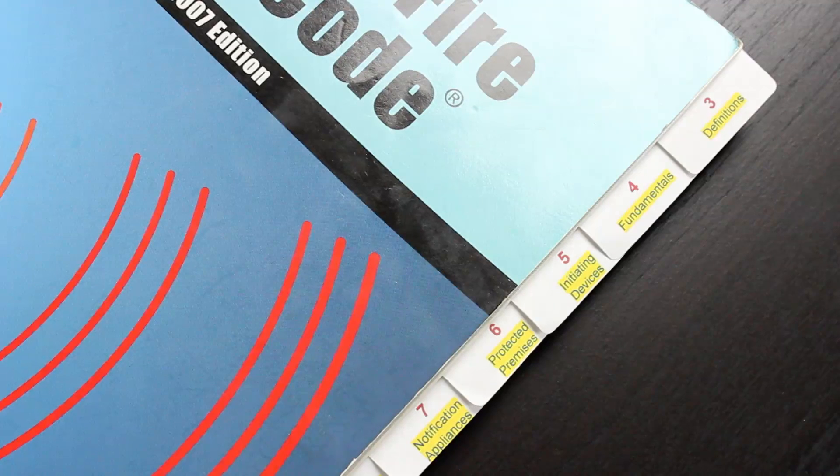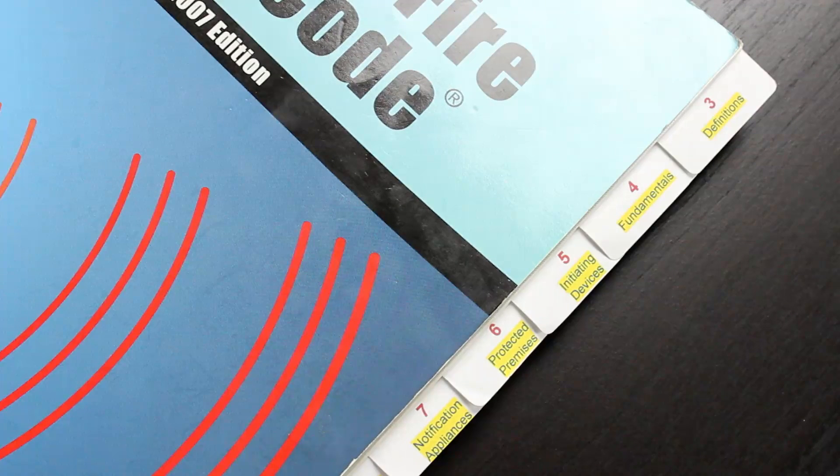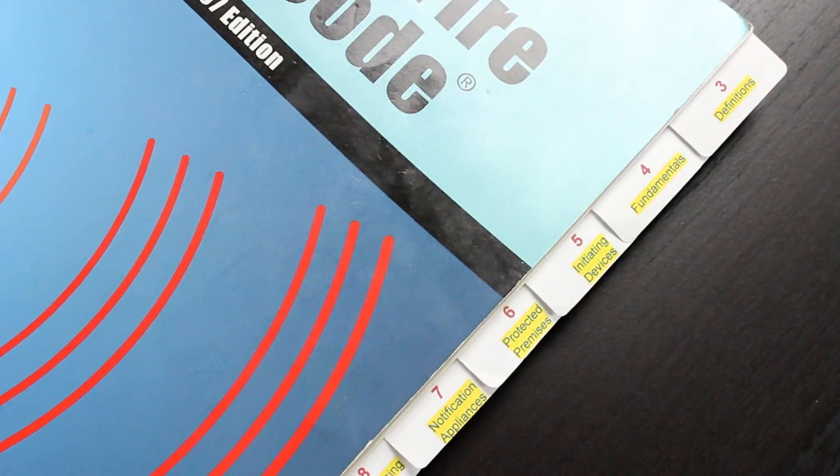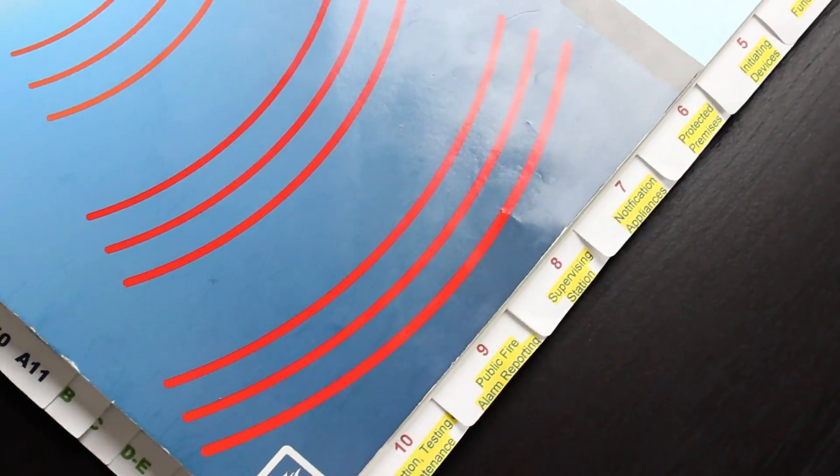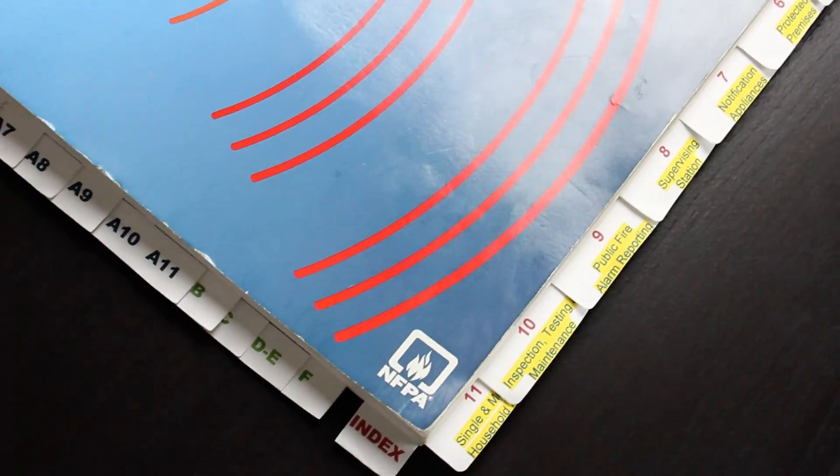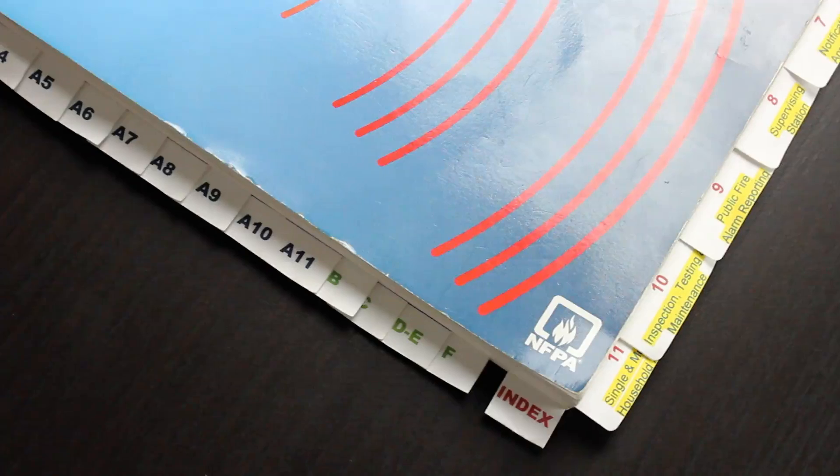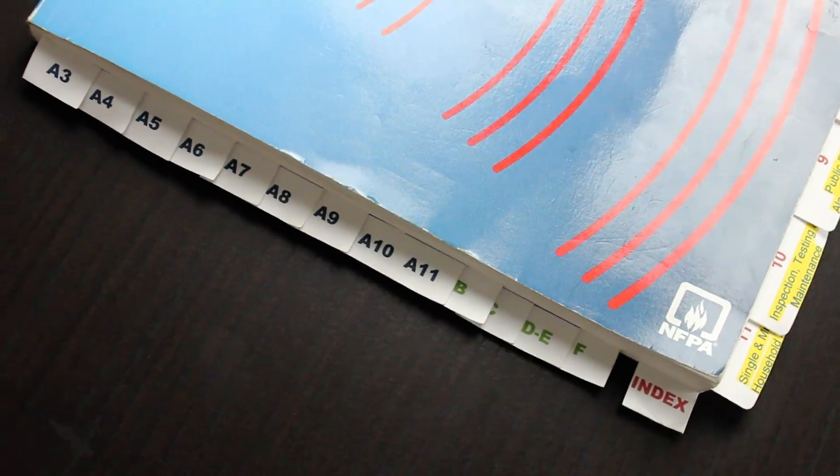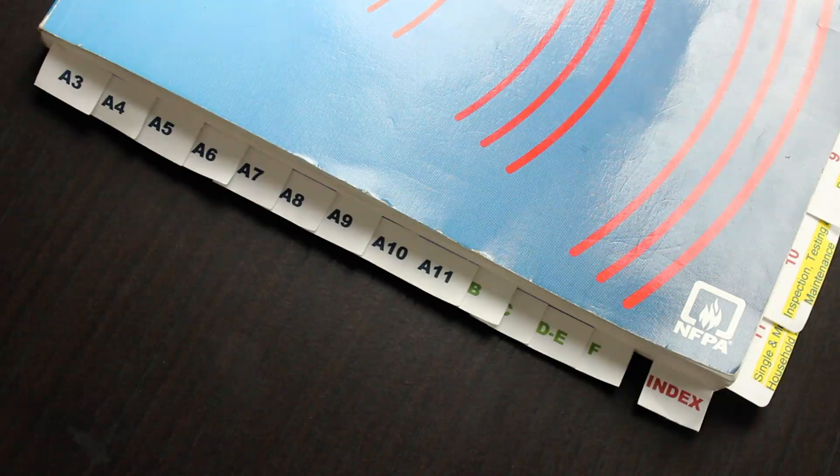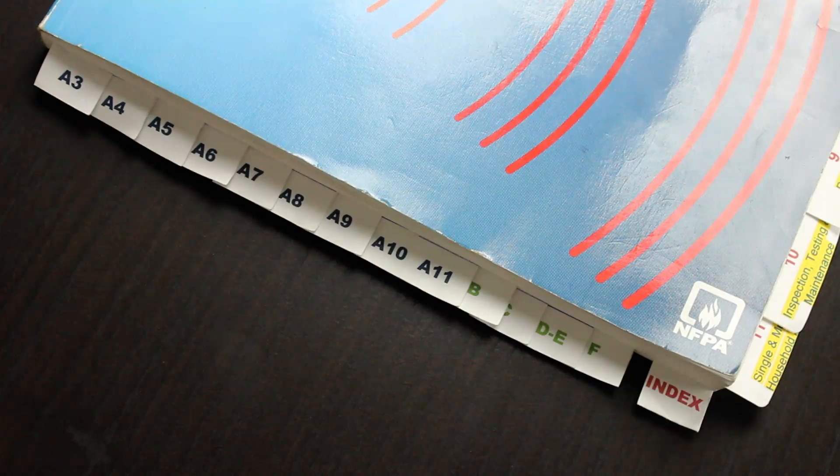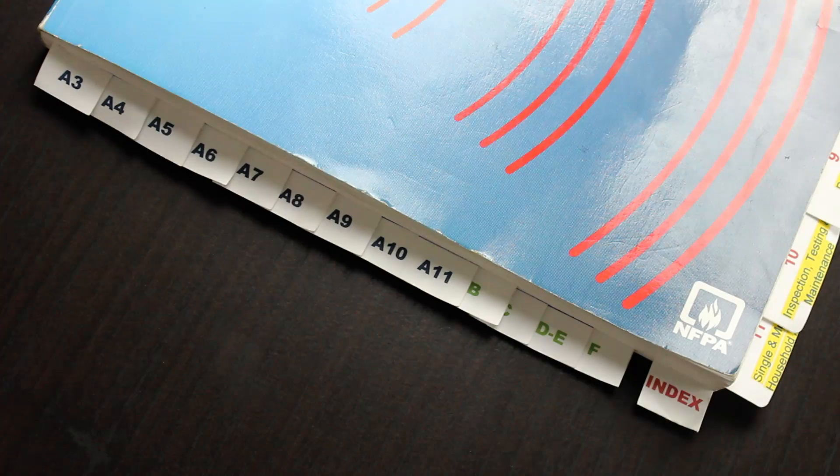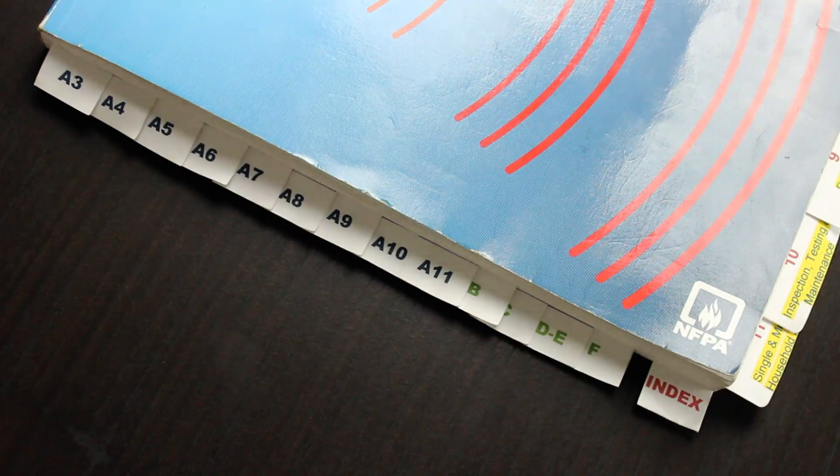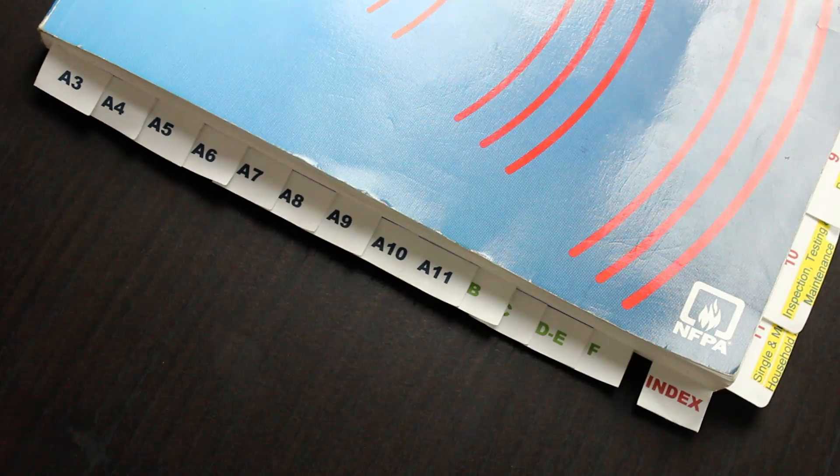I start with chapter three. I divided into chapters. Chapter one is the administration chapter, which I don't think will be significant to our test, and chapter two is basically reference books. So we start with chapter three and go down to chapter eleven. Then we have the annexes. Annex A is the explanatory material which expands on the actual codes. Annex B is the engineering guide for automatic fire detector spacing. Annex C is the wiring diagrams and guide for testing fire alarm circuits. Annex D is the mass notification systems.